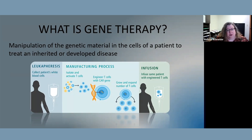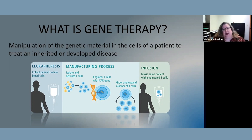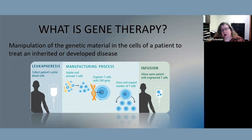We move those cells into the lab, where they go through an engineering process — a laboratory process — to actually do that manipulation of the genetic material and change those genes. They then go through an expansion phase in the lab, growing the cells to expand the number of CAR-T cells, because we want a specific number of cells before putting that material back into the patient. And then on the far right, the infusion — the cells go back into the patient.